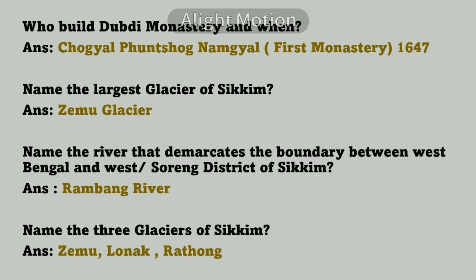Who built Dubdi Monastery and when? It was built by Chogyal Funsok Namgyal. Dubdi Monastery is the first monastery of Sikkim; it was established in 1647. Name the largest glacier of Sikkim — Zemu Glacier. Name the river that demarcates the boundary between West Bengal and West Soaring District of Sikkim — Rambang River.